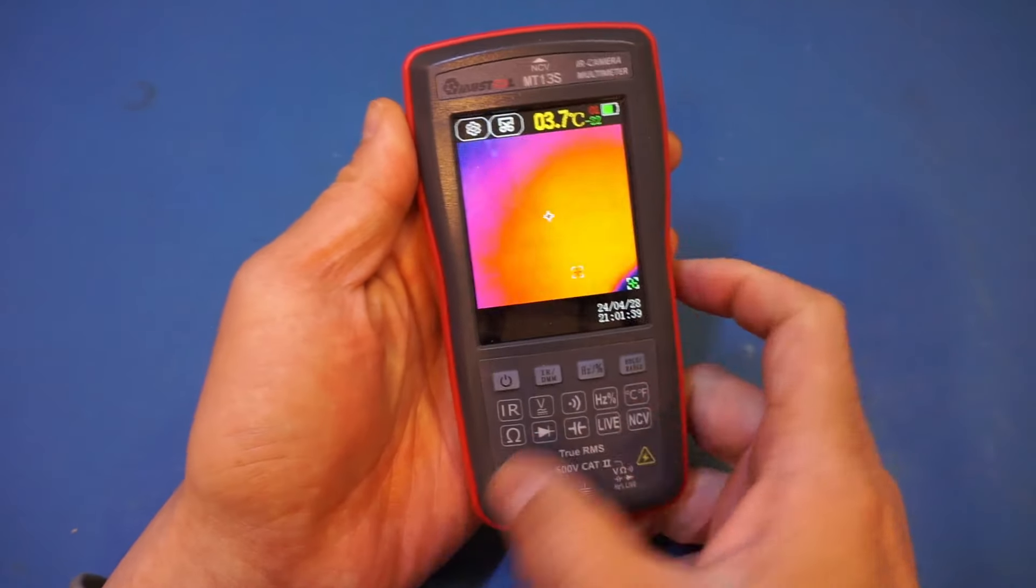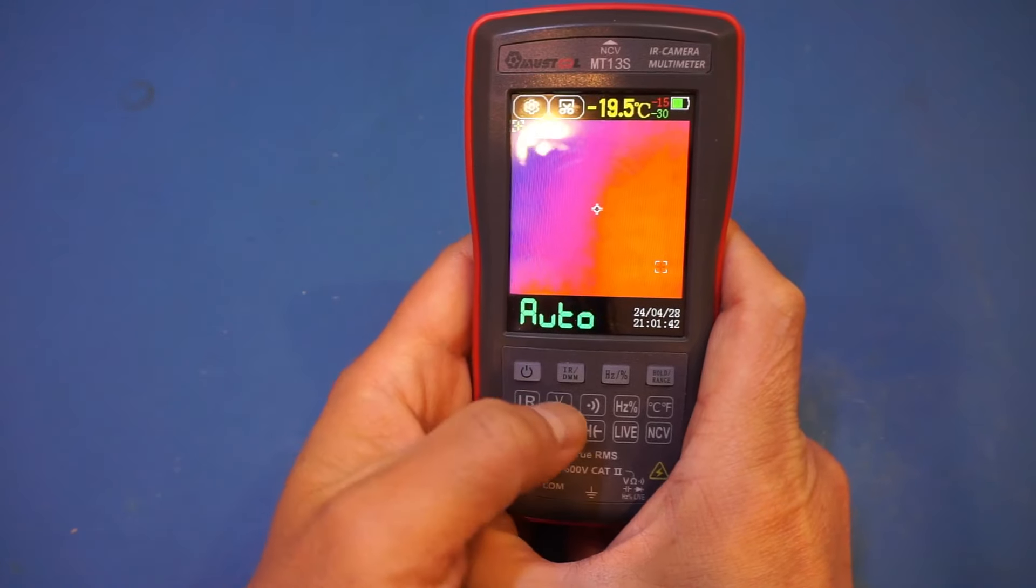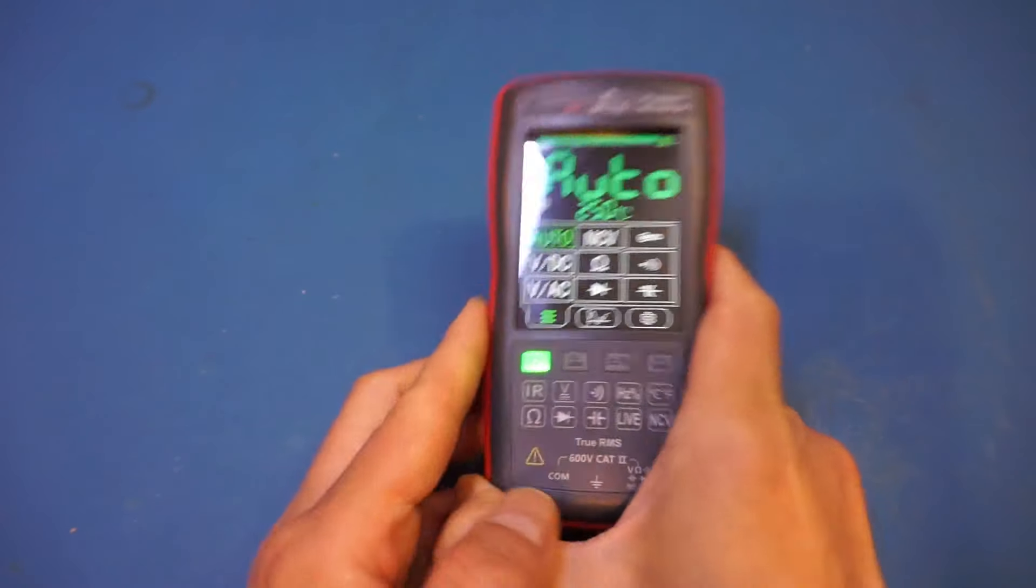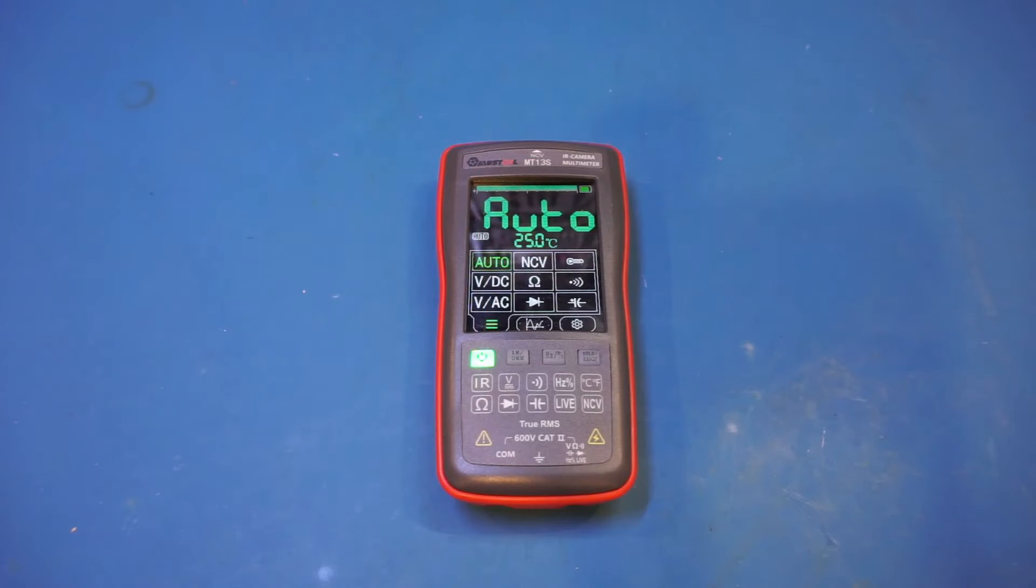And of course, to switch to the digital multimeter, we can just press the IR DMM button here, and that will get you into the DMM mode. For the MT13S, the multimeter has been upgraded to 10,000 counts. So it will definitely be a lot more useful than the 4,000 counts found in the ET12S.